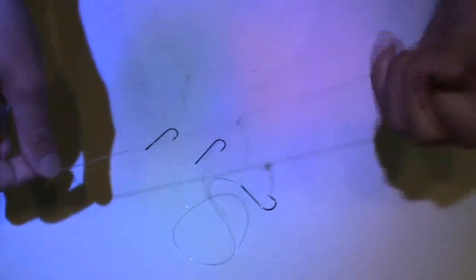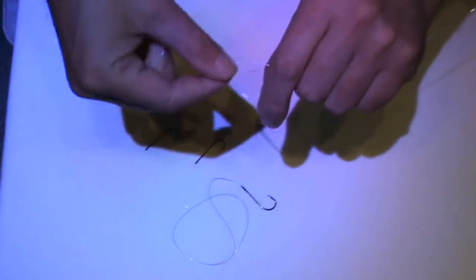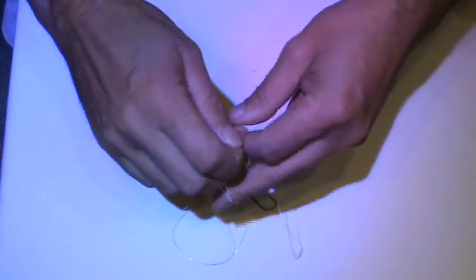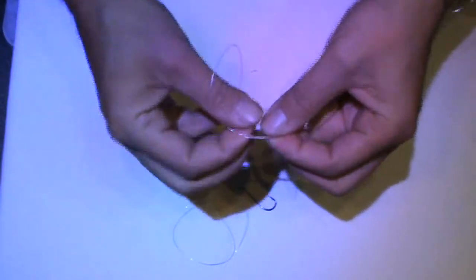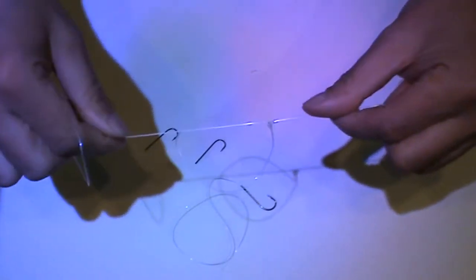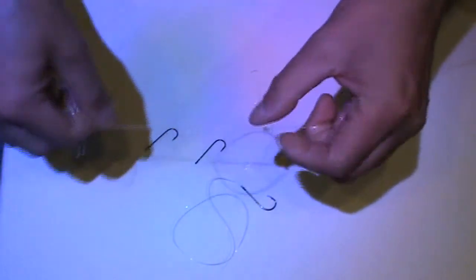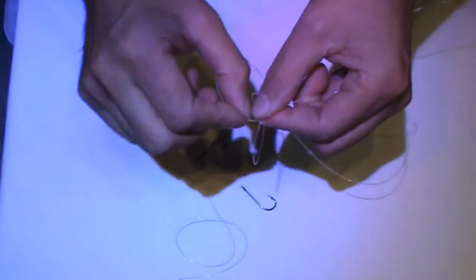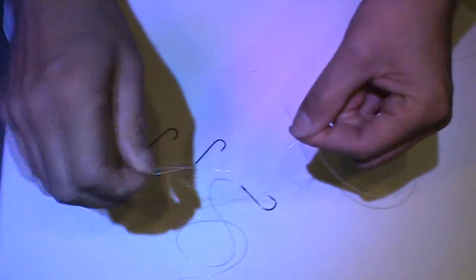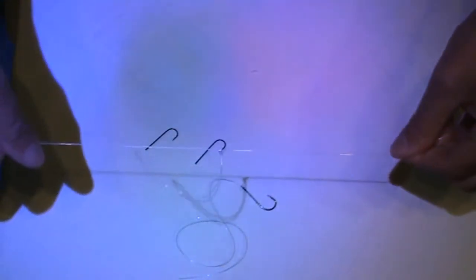When we come down instead of the swivels and the beads we've got loops. Now with these loops what I do is I go one and then I go again two like so, and then I just pull it tight. So you end up with that. Then what I do is I take the loop and just cut it. And that will be your hook trace once you've cut that.